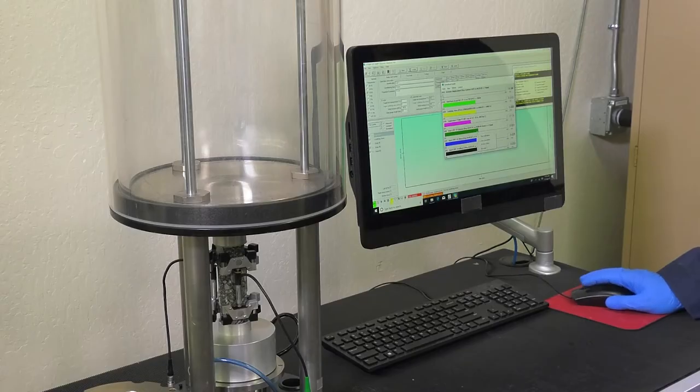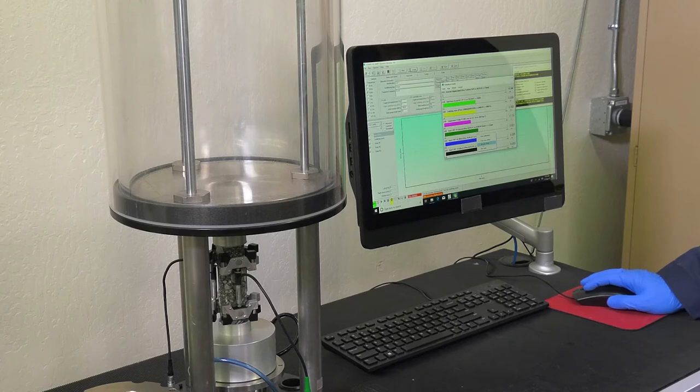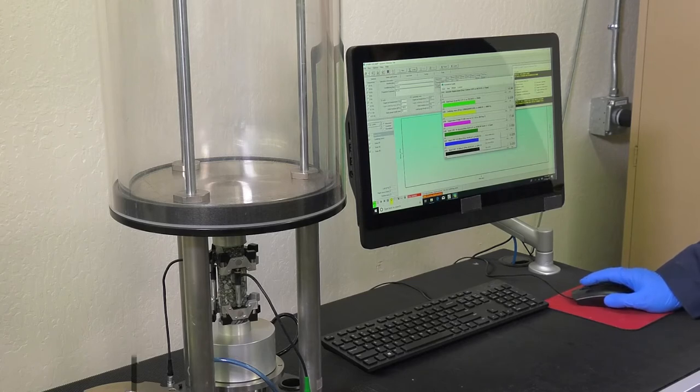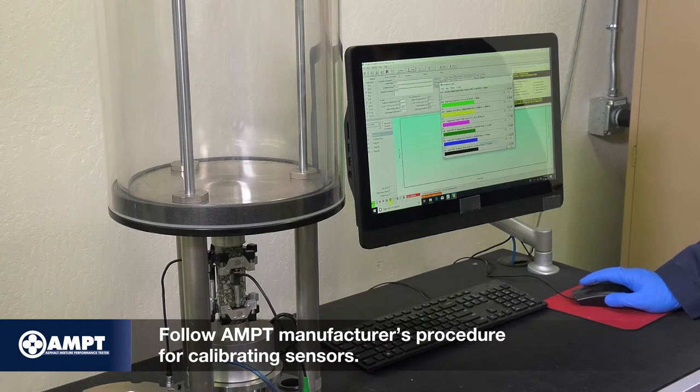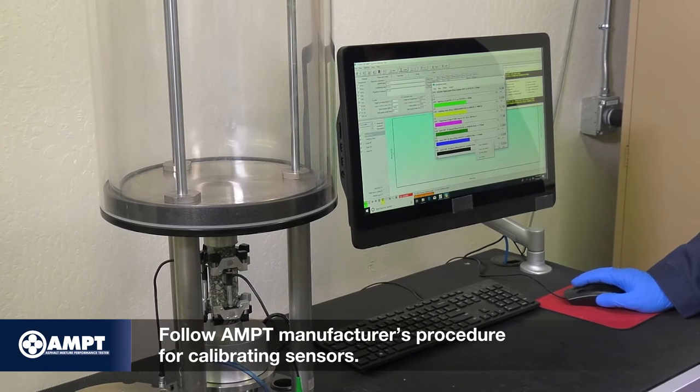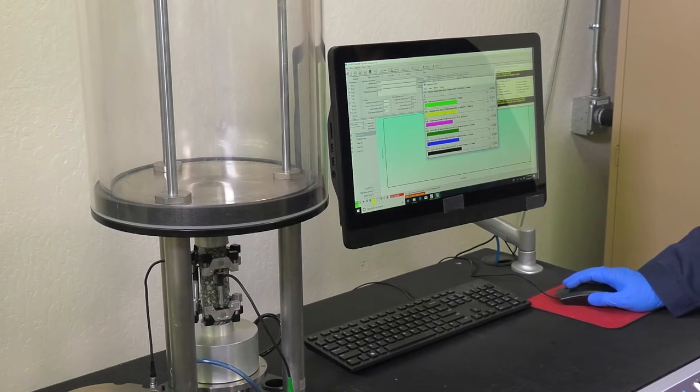Once the LVDTs are installed, ensure the LVDT readings are adjusted to accommodate the deformation range of the test. It is typically set to zero to accommodate displacements due to compression and tension.